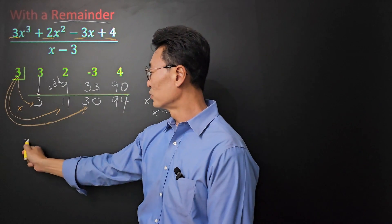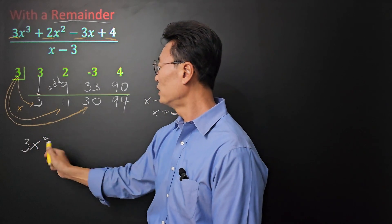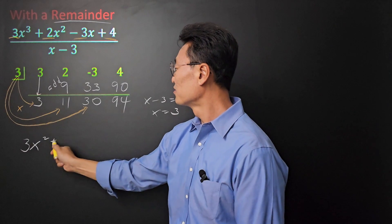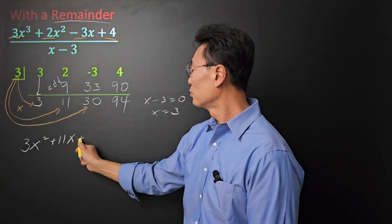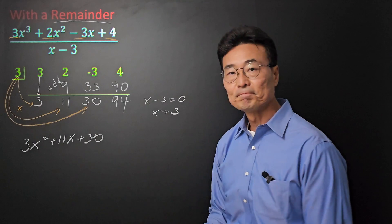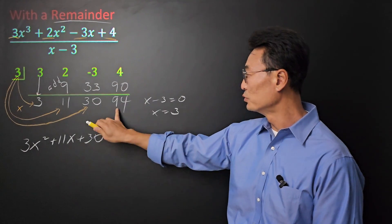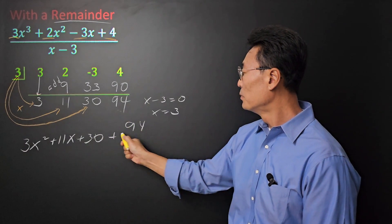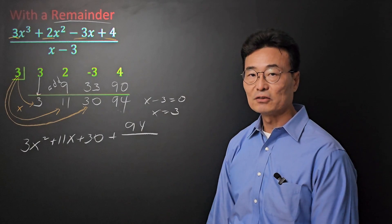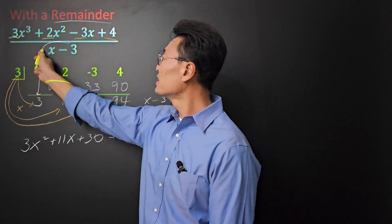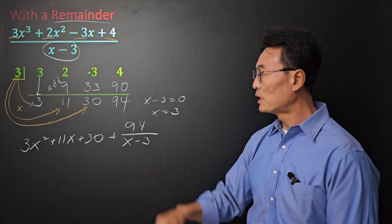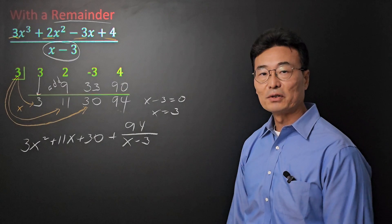Then, our answer is going to be 3x squared, 1 less than the x cubed that we started with, plus 11x, plus 30, and the main point of this example is, what do you do with the remainder 94? We take the 94, put it on the top as the numerator, and we use the same divisor, x minus 3 on the bottom, and that's going to be our final answer.